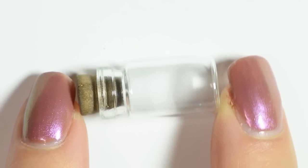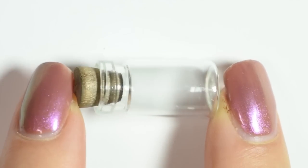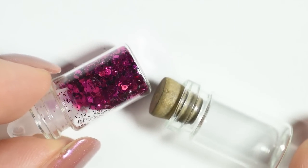Firstly you need to pick out your bottle. I'll be using this miniature glass one that I got from eBay. They usually come filled with nail art glitter.